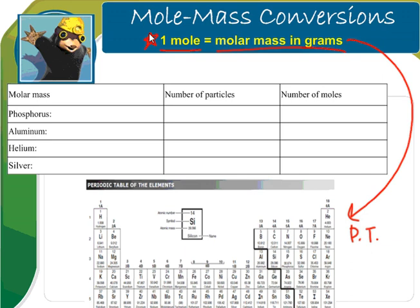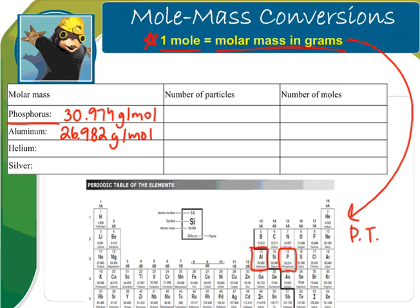Looking at our table, for phosphorus, I find it on the periodic table and it shows me that the molar mass is 30.974 grams per mole. I can do this for every element. Aluminum is going to be 26.982 grams per mole. You can find helium and silver on your own.